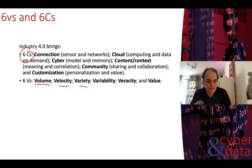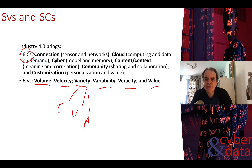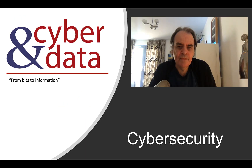We can also define the six V's of big data. Volume is the amount of data we create. Velocity is the speed at which we create and consume data. Variety covers different formats — text, video, audio, and so on. Variability describes how data changes in terms of processing and storage. Veracity relates to the trustworthiness of the data, and finally — and probably most importantly — Value is the worth of that data.